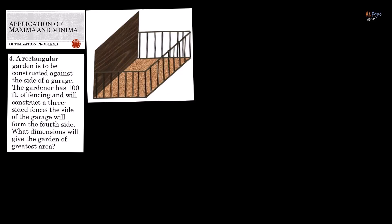This is the rectangular garden, and this is the wall of the garage. We have 100 feet of fencing covering this side, the other side, and the bottom. Since it's in the form of a rectangle, it has a length and a width. Let the width of the garden be equal to x, and let its length be equal to y.